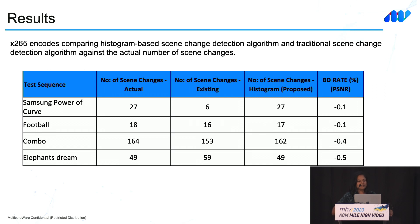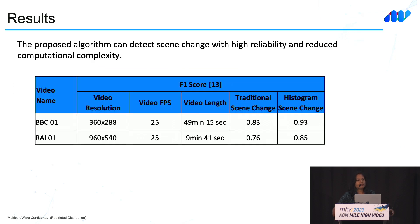Looking at the results, we manually computed the actual number of scene cuts present in the video and compared that against detections from the traditional X265 algorithm and the proposed histogram-based algorithm. The histogram-based scene detection algorithm was almost able to identify all the scene cuts in the video, and it also provided a bitrate gain of around 0.1 to 0.5 percent. In a second set of experiments measuring F1 score — which uses both precision and recall — two long sequences of 10 to 15 minutes were tested, and the histogram-based algorithm showed a higher F1 score, almost closer to 0.9.